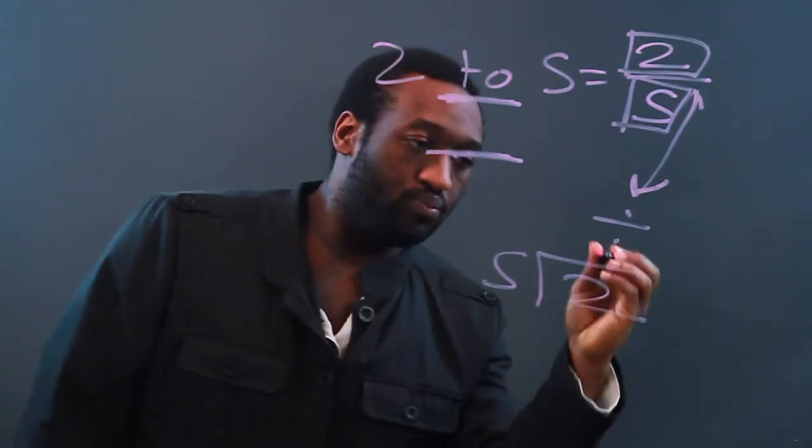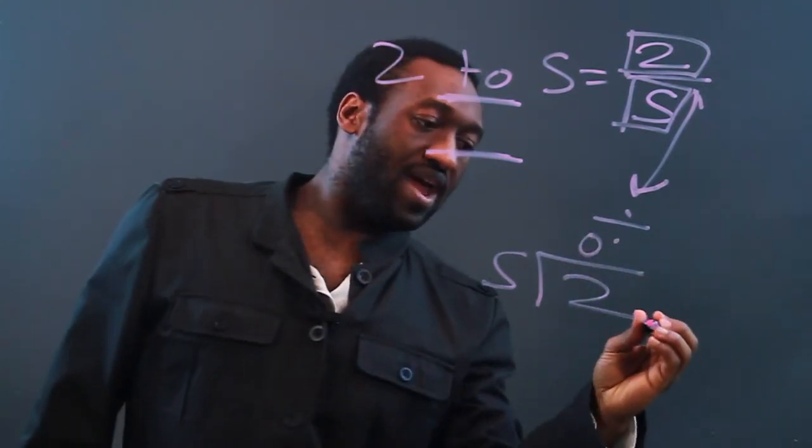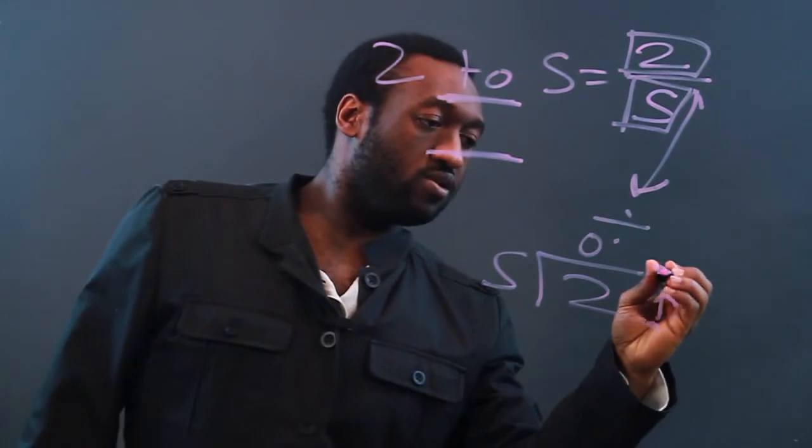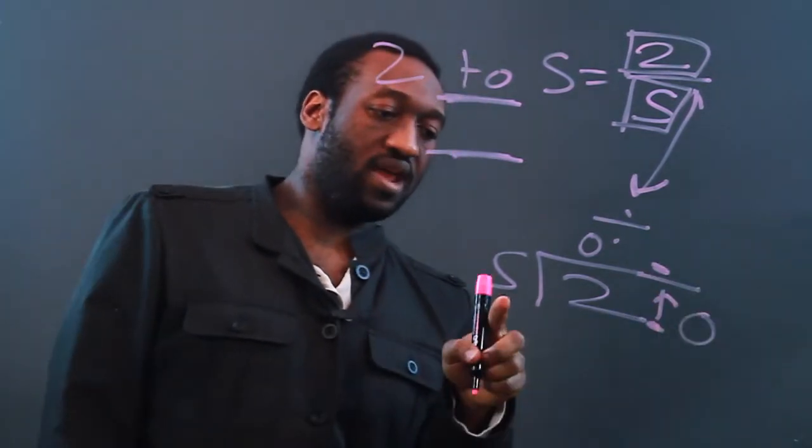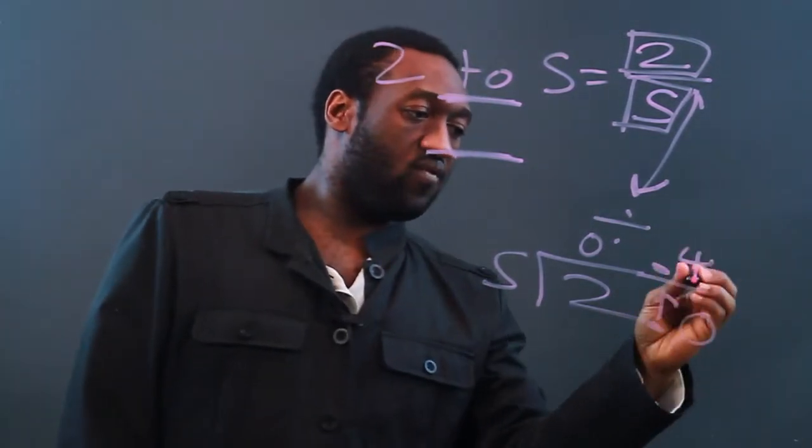We'll put a 0, we'll add a decimal, bring it up, and let's add a 0. Now 5 goes into 20 4 times.